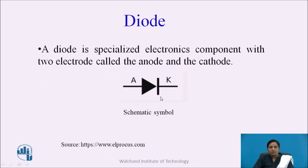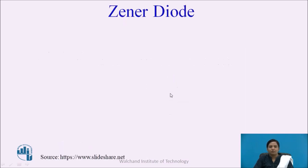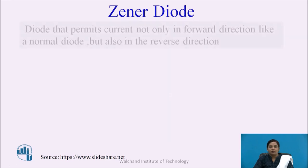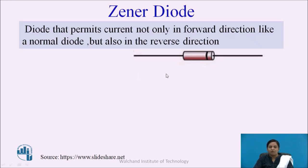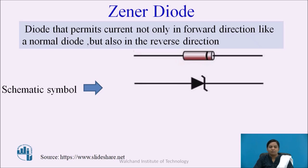The diode is a specialized electronic component with two electrodes called anode and cathode. The Zener diode is a type of semiconductor diode that permits current not only in the forward direction but also in the reverse direction. It is a specialized device designed to operate in reverse breakdown voltage. The symbolic representation consists two terminals, anode and cathode. The symbol of Zener diode is similar to a PN junction diode, with the only change being bent edges at the bar.